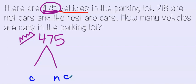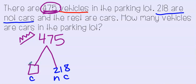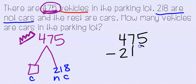Let's see what else we know. 218 are not cars, so let's put our 218 over here. Our missing piece in this equation are our cars — we don't know how many that is. When we look at this math mountain, do you think we need to add or subtract? Well, if we add, we're going to get a really big number that's bigger than the king. Can anyone be bigger than the king in our math mountain? No. So let's go ahead and subtract — 475 minus 218.